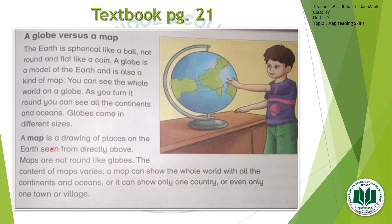A map is a drawing of places on the Earth seen from directly above — it is a flat sheet. Maps are not round like globes. The content of maps varies: a map can show the whole world with all the continents and oceans just like the globe, or it can show only one country, or even only one town or village. But a globe, in comparison with a map, has to show the entire world.